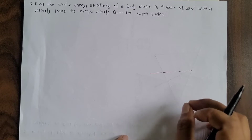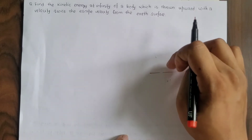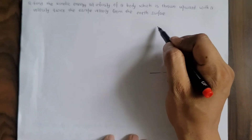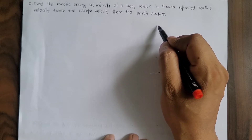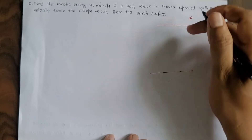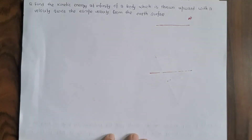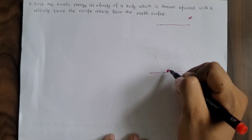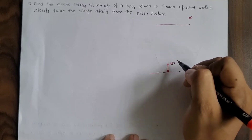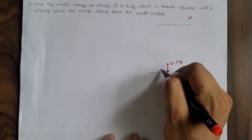As you know, escape velocity represents the velocity with which an object is thrown upward such that it escapes from the Earth's gravitational field. Infinity is the ending point of Earth's gravitational field. The object has mass m, and it is initially thrown from the ground with velocity u equal to twice the escape velocity, that is u = 2ve.